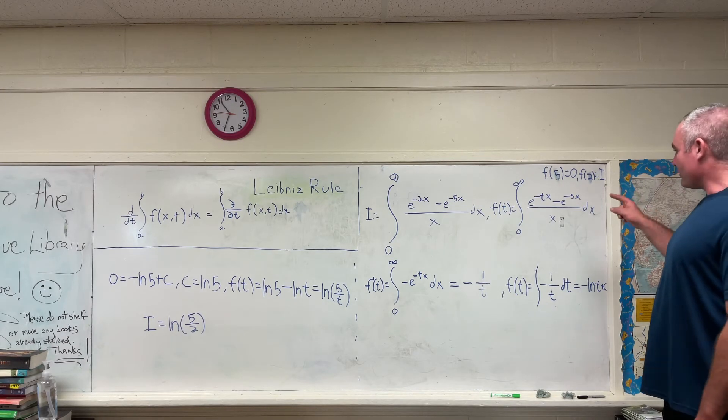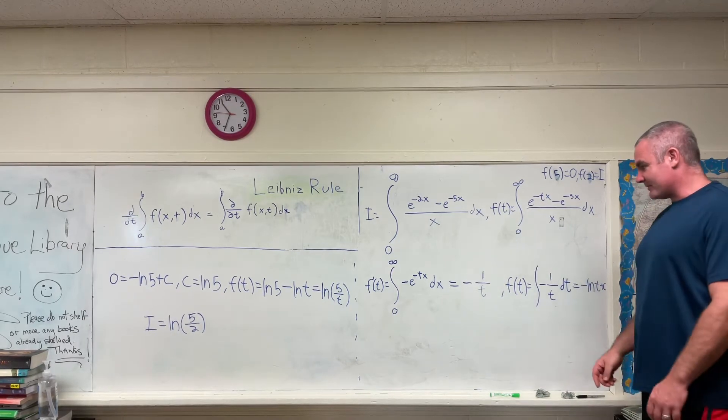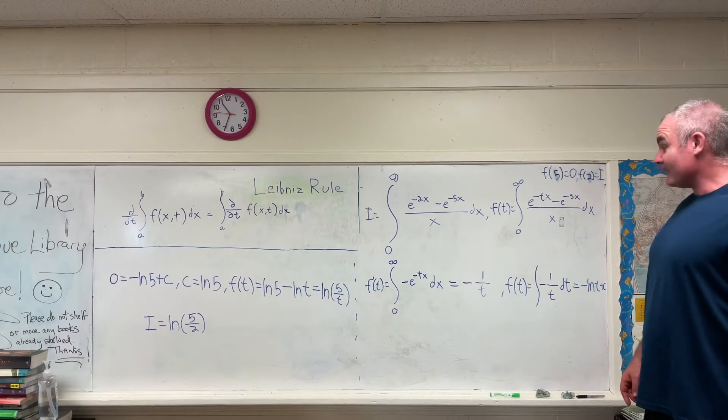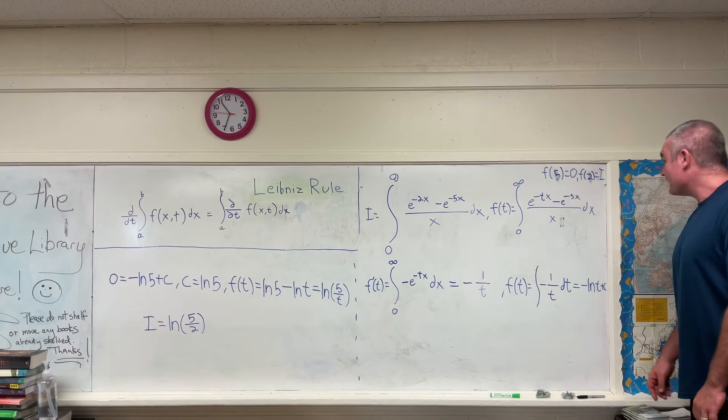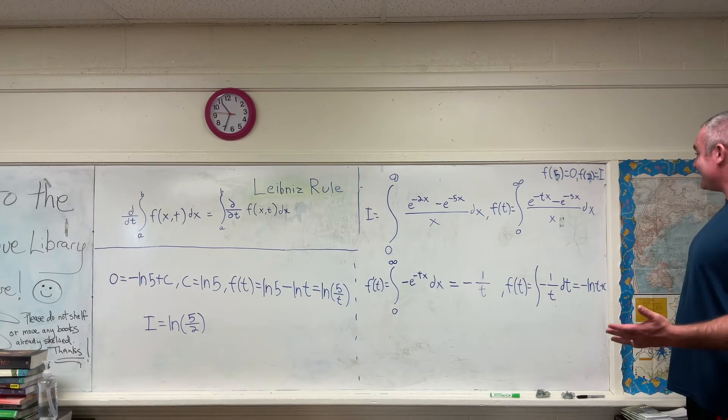So, if we apply that rule to f of t, we'll have that f prime of t is equal to the integral from 0 to infinity, of negative e to the negative tx. I hope you can see where that comes from. Basically, with a partial derivative with respect to t. If we're taking the partial with respect to t, x is a constant.